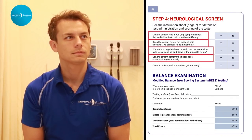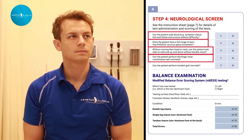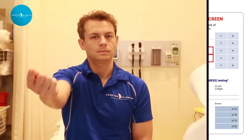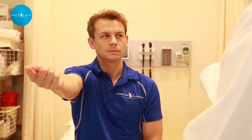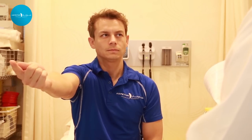The next neurological test is the finger-to-nose coordination test. The athlete sits comfortably with eyes open, arm outstretched with shoulder flexed to 90 degrees and elbow and finger extended. On the start signal, the athlete performs five successive finger-to-nose repetitions using the index finger, returning to the starting position as quickly and accurately as possible. Points are deducted for inaccuracy.